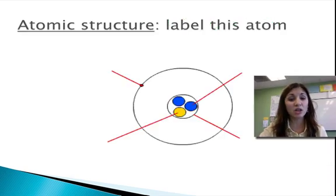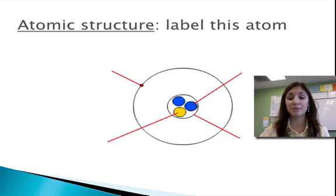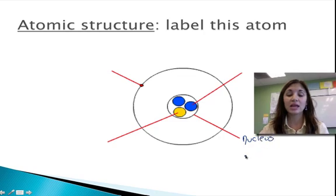So take a second now, follow along, see if you can label all the parts of this atom, and see if you can also figure out what element this might be. So first of all, I have here my nucleus. The nucleus is in the center of the atom. Inside the nucleus, I have protons and neutrons.